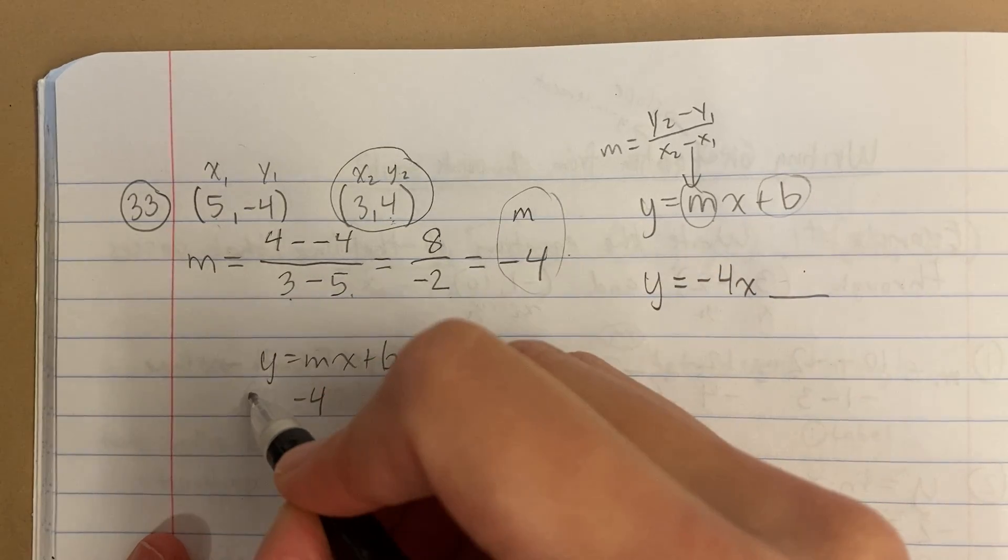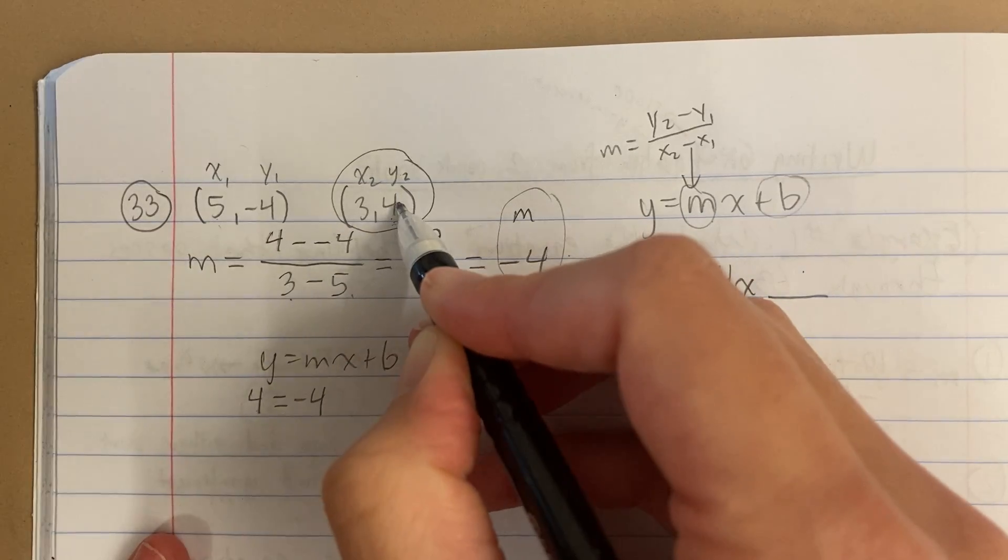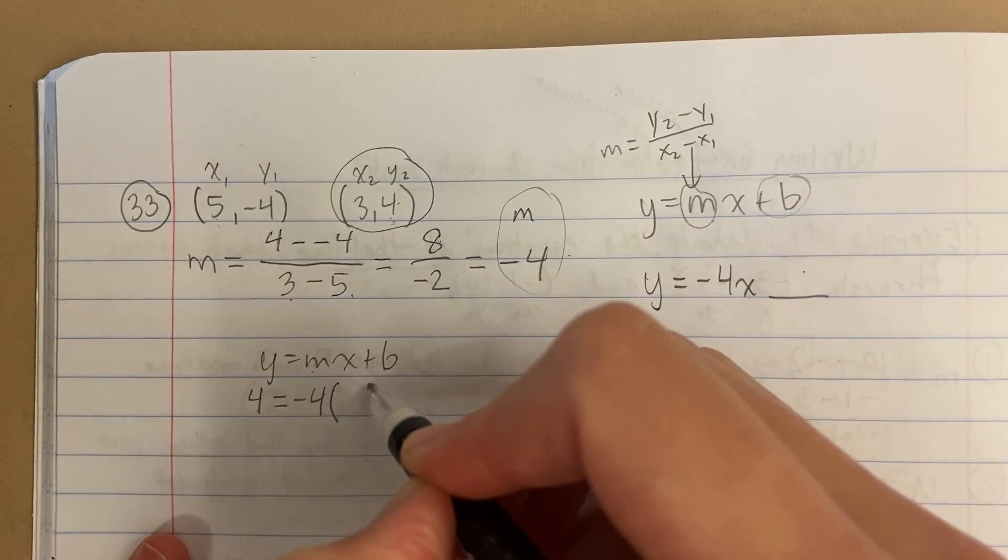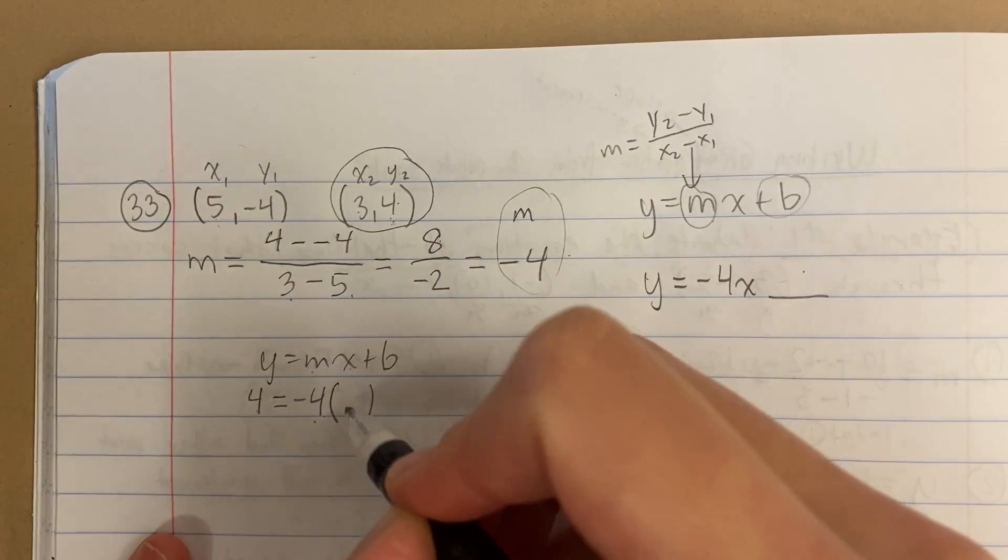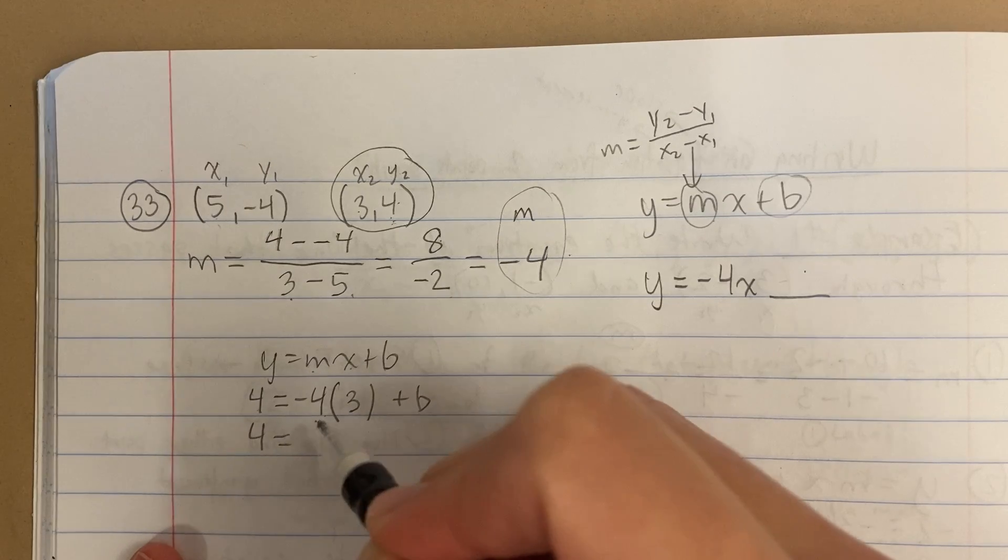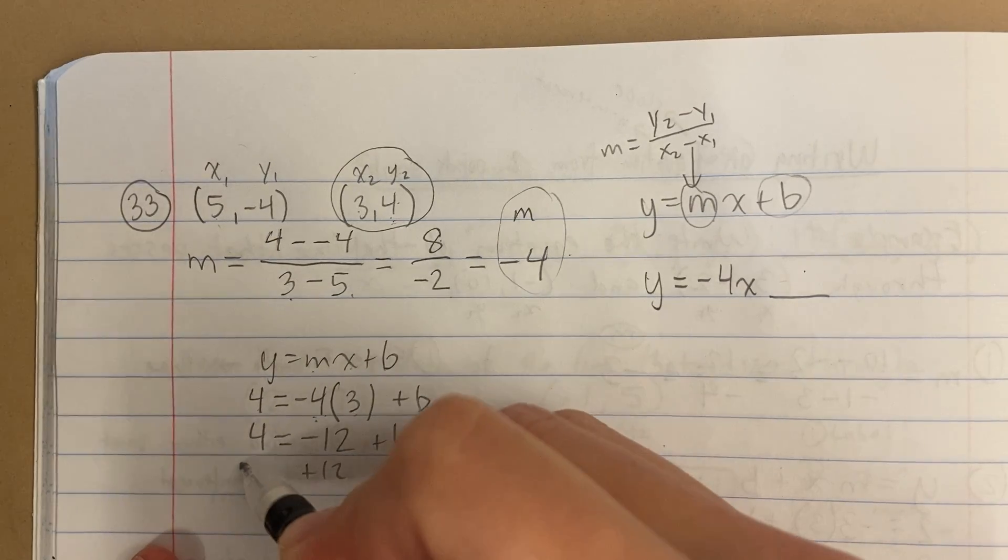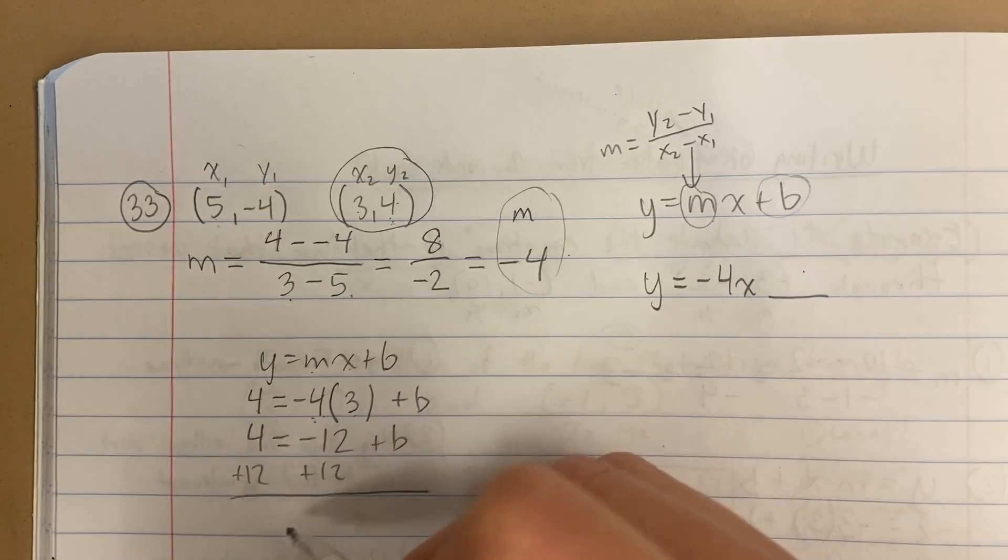I'm going to plug in 4 for y, so that's y is 4. This is m times x, so m times x is 3, and I'm solving for b. Negative 4 times 3 is negative 12, and then I'm adding 12 to both sides to get b by itself.